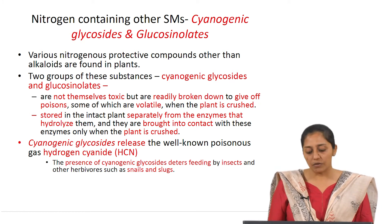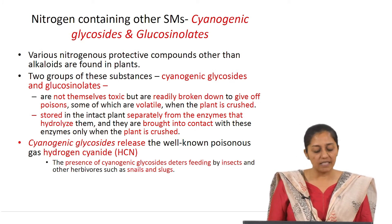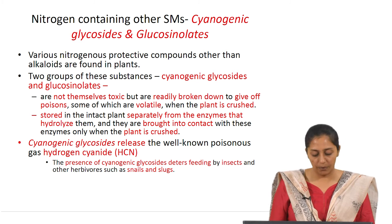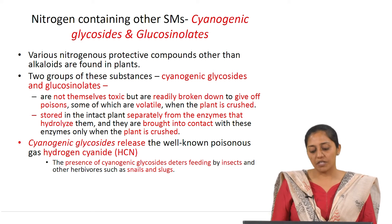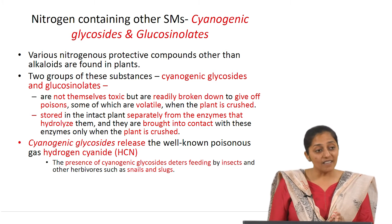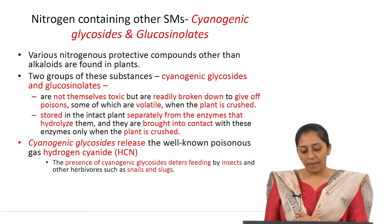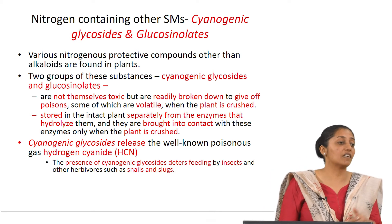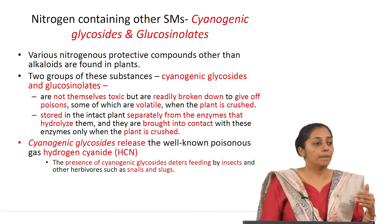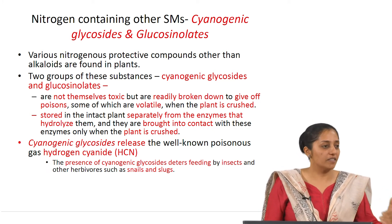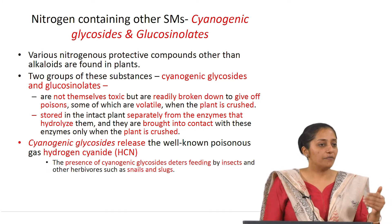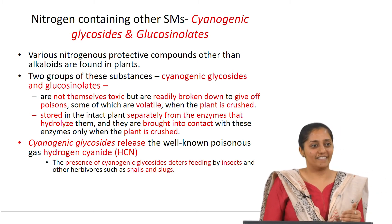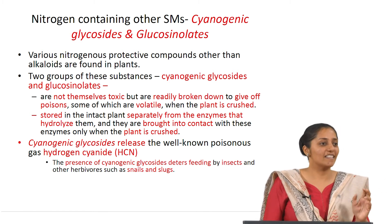Cyanogenic glycosides release hydrogen cyanide, a well-known toxic compound. Their presence deters feeding by insects and other herbivores like snails and slugs. This deterrence is passed through generations as a kind of acquired defense.